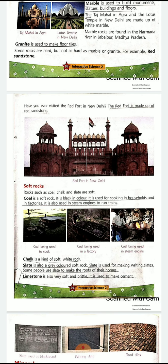Coal is also used in factories to prepare different things. In steam engines, coal is put inside to move the chain. Chalk is a kind of soft rock — the white chalk we use to write on the blackboard. Slate: the blackboard is another form of slate. You have a small slate; a big blackboard — these are all soft rocks. Slate is used for making writing slates, and some people use slate to make the roof of their homes.